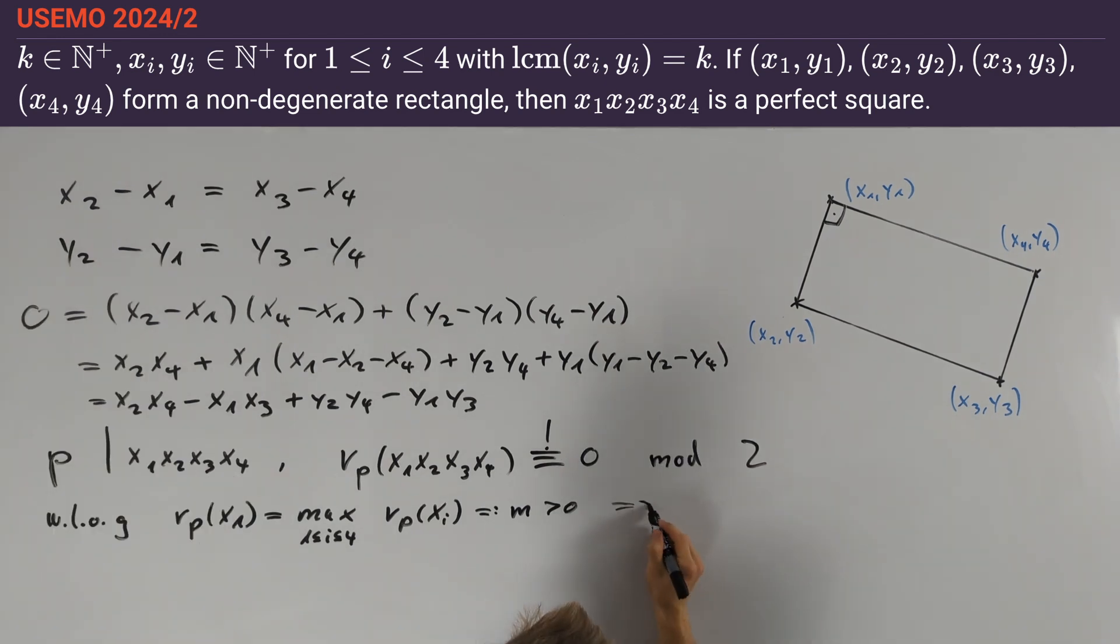This implies that p^m divides k, which equals the least common multiple of xi, yi. Therefore nu_p(xi) ≥ m or nu_p(yi) ≥ m.